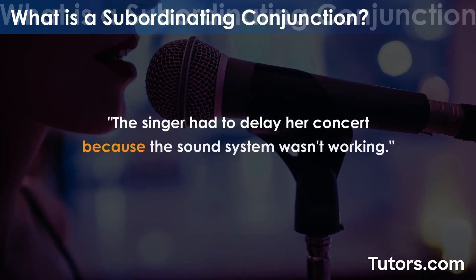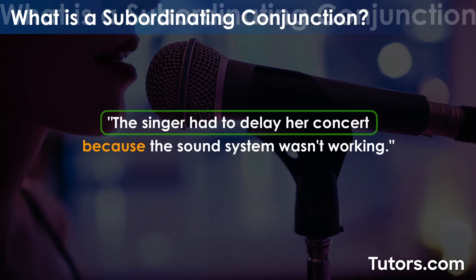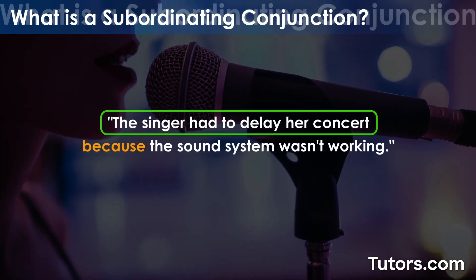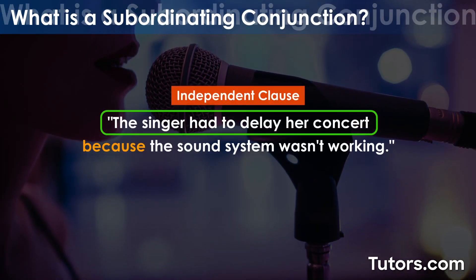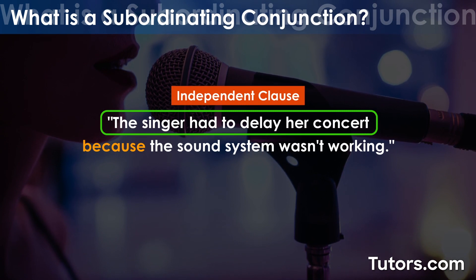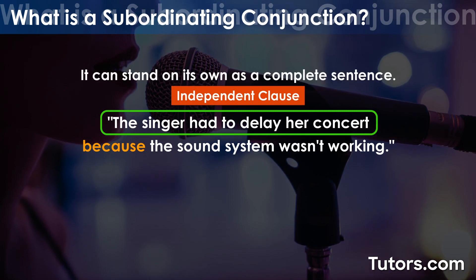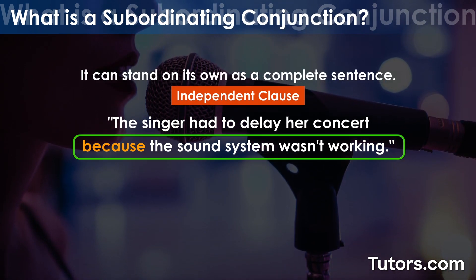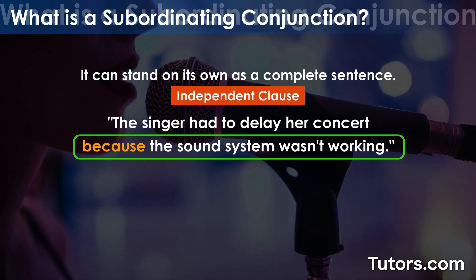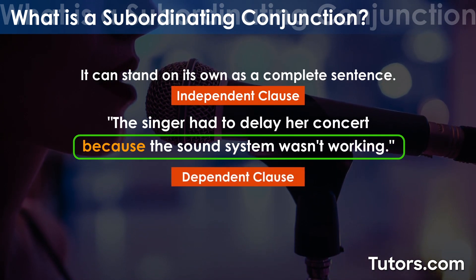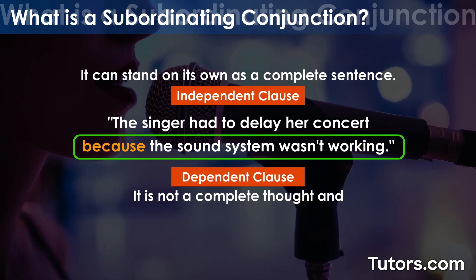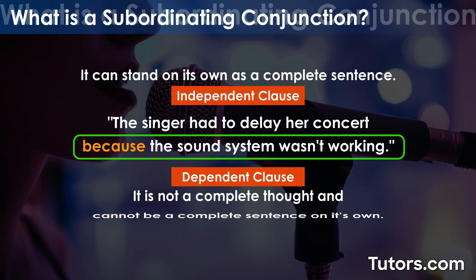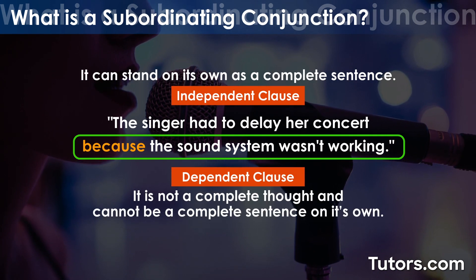Take this example. 'The singer had to delay her concert' is an independent clause — it can stand on its own as a complete sentence. 'Because the sound system wasn't working' is a dependent clause. It is not a complete thought and cannot be a complete sentence on its own.